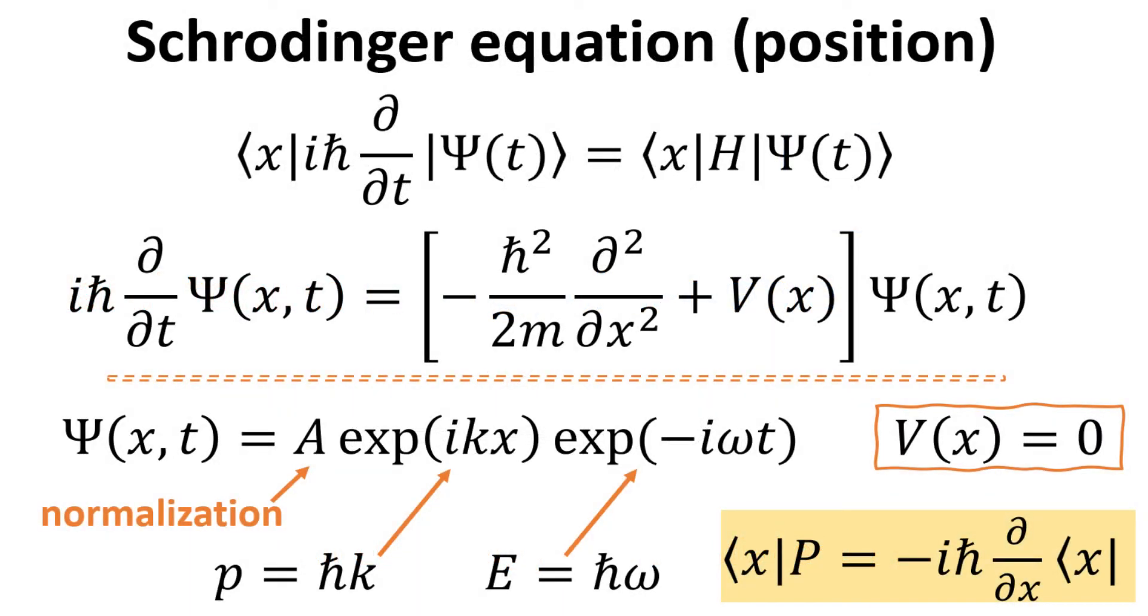Let's express our Schrödinger equation in the position representation by acting it with the x bra from the left. This allows us to express the state vector as a wave function on the left side of the equation. The momentum operator in the Hamiltonian in the position representation will become differential in x, using the equation we previously derived in yellow highlight. The Schrödinger equation now becomes a differential equation in time and position.